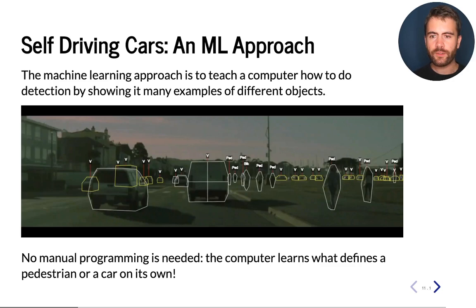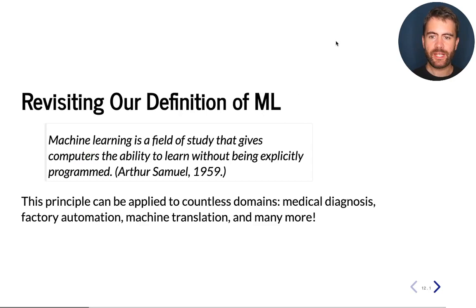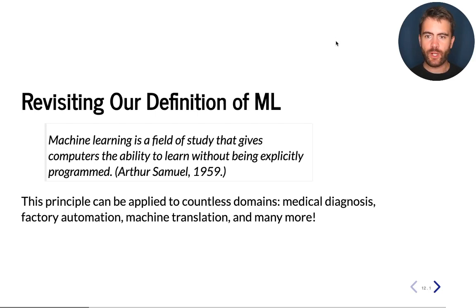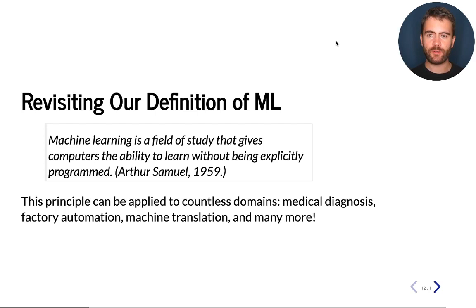As humans, we will only need to specify the data and the way by which the computer would learn. And now using this example, we can better understand the definition given to us by Arthur Samuel. 'Explicitly programmed' corresponds to the first example where we try to write the software ourselves by hand, and 'the ability to learn' is exemplified by the machine learning approach to building an object detection system. I gave this example in the context of self-driving cars, but this approach can be used to build state-of-the-art software in countless domains.